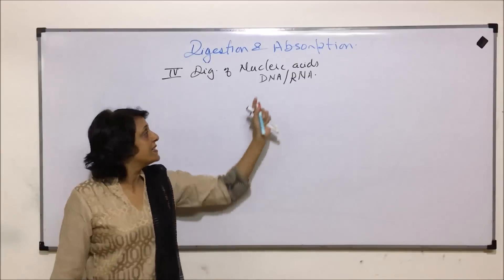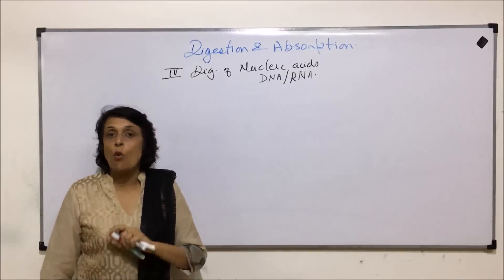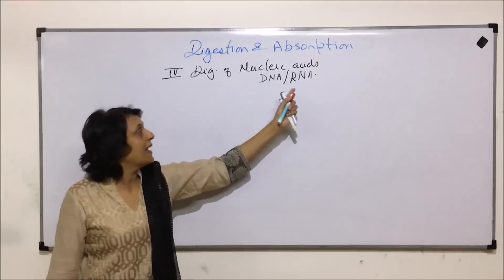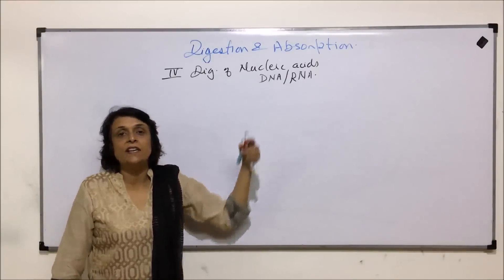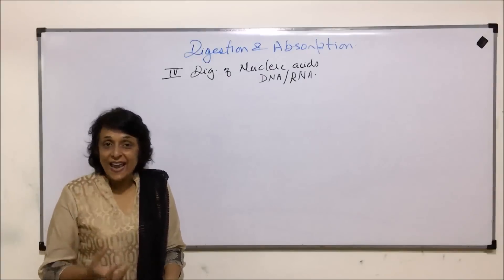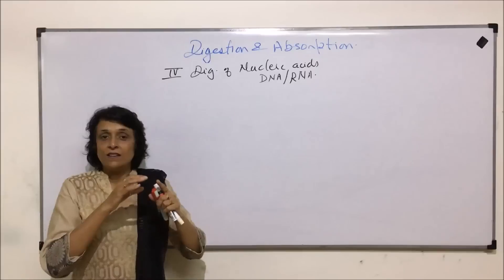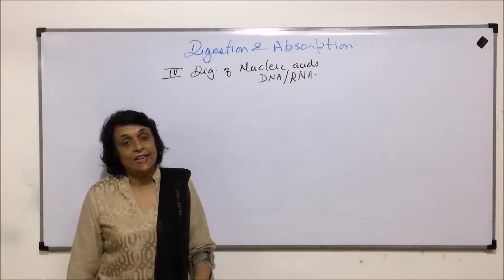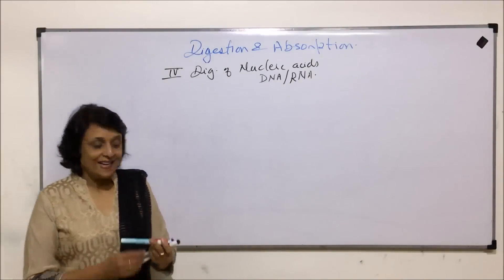Nucleic acids, that is DNA and RNA, are present in all the cells. DNA is only in the nucleus part and RNA is in nucleus and in cytoplasm also. So if we are eating a cell, we are getting this nucleus which contains DNA and RNA. So this also needs to be digested.